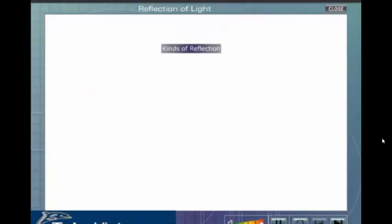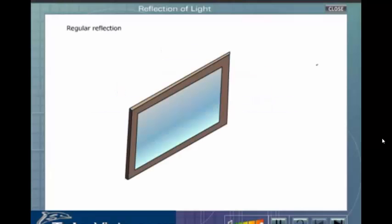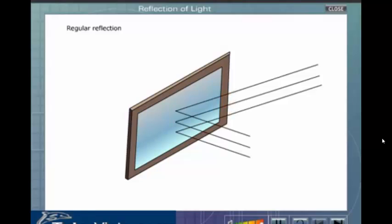Reflection is of two kinds, namely regular reflection and irregular reflection. Regular reflection takes place when a beam of light falls on a smooth and polished surface like a mirror. In regular reflection the reflected light goes only in a fixed direction.